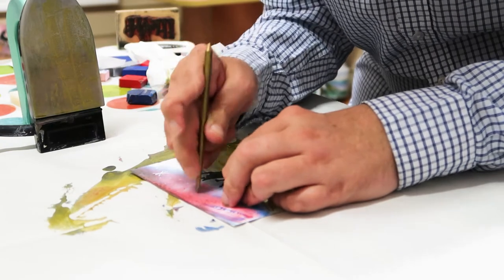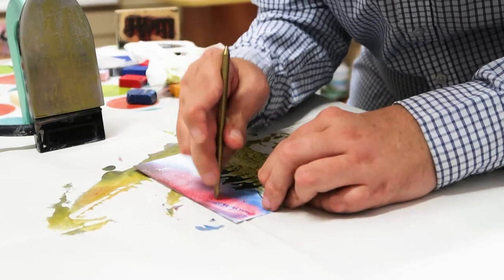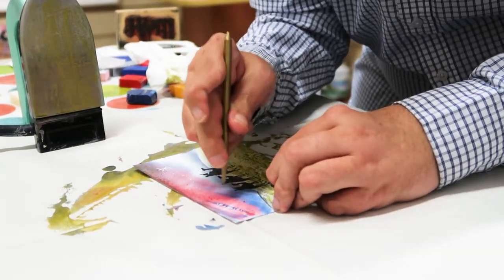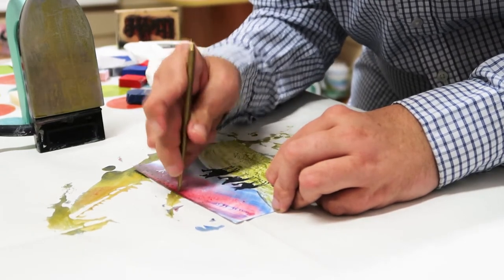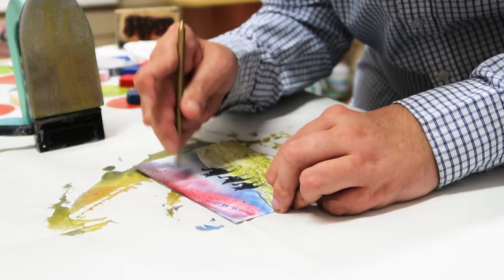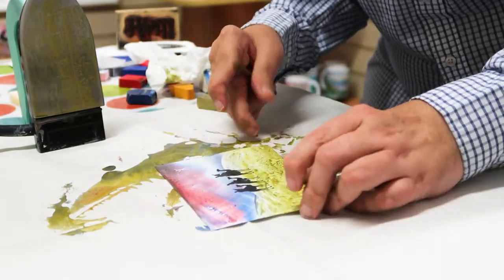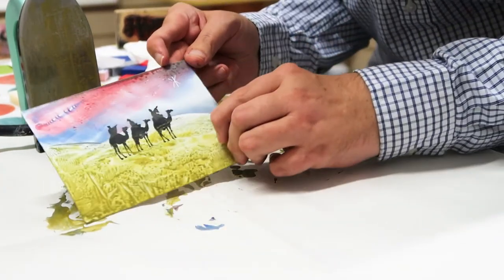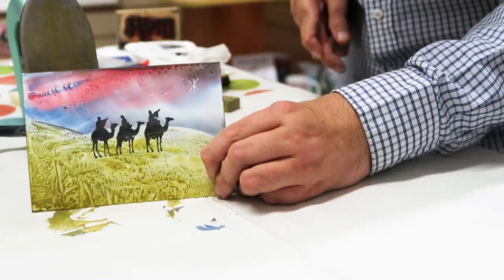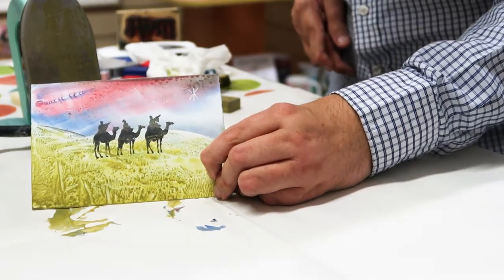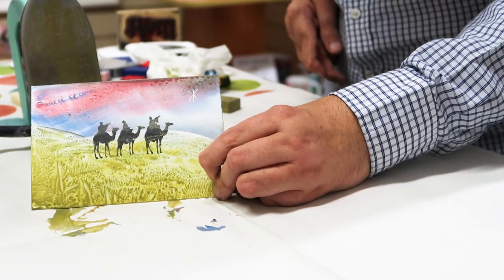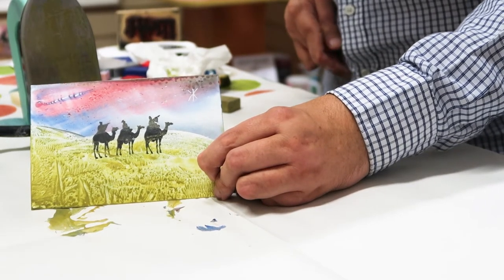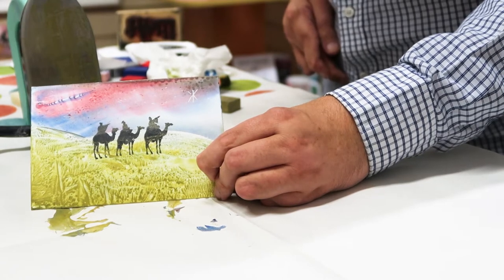They would have been around on that starry night. I'm just literally bouncing the tool up and down as you can see, because they're just tiny stars. And that's our little three wise men image that can be mounted into a greeting card.